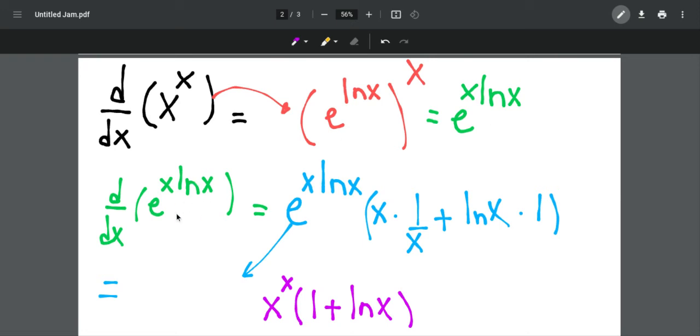The derivative of e to the power of x times ln x is just itself, and then multiply it by the derivative of the inside, which is x times ln x.